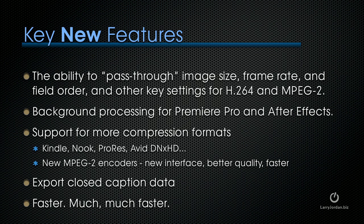Now we can get into the new features in the Creative Cloud release of Media Encoder. First is the ability to pass through image size, frame rate, and field order, and other key settings when compressing for H.264 and MPEG-2. Adobe's website says that, though I think we can also pass through when converting to ProRes. This pass-through makes Adobe Media Encoder finally worth considering for any kind of transcode work, because prior to the Creative Cloud release, we could not reliably use it for transcoding.